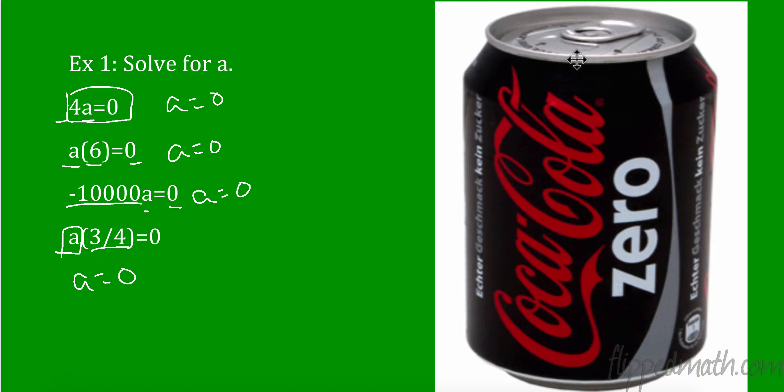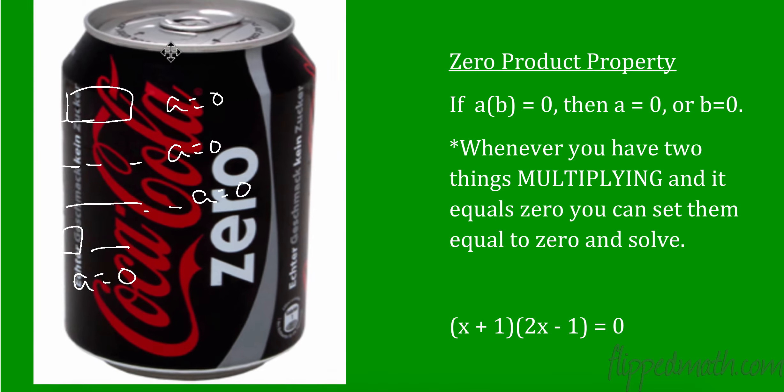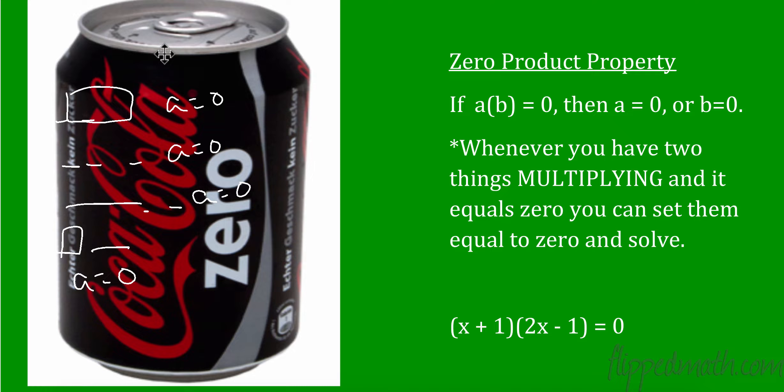Anytime I multiply and my answer is 0, one of the factors, one of the things I'm multiplying has to equal 0. And that really does give us this really great and more important property. It's called the zero product property. And that says if I have two things, a times b and it equals 0, then either the first factor a equals 0 or the second factor b equals 0.